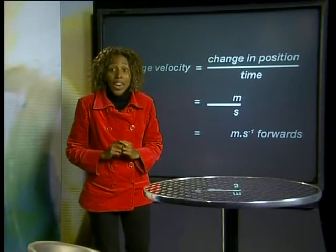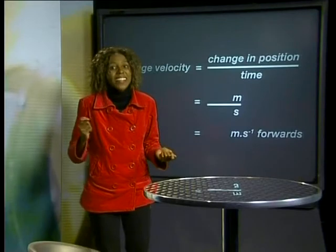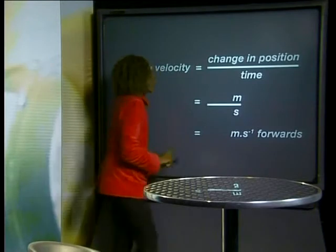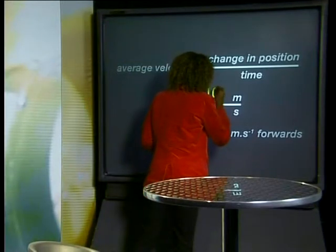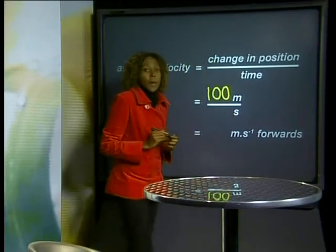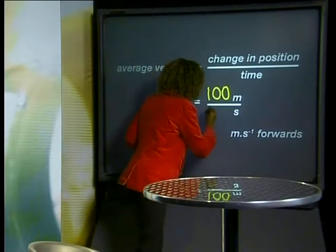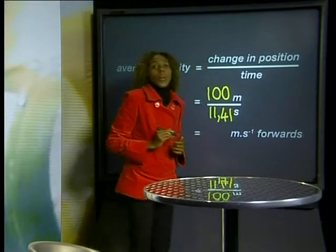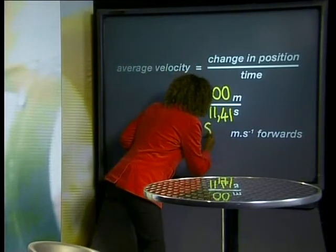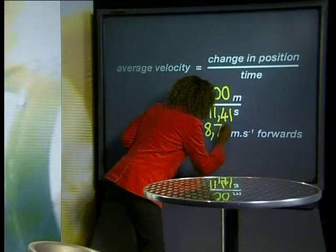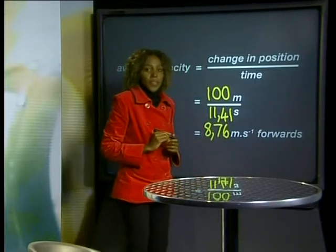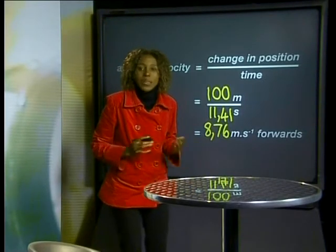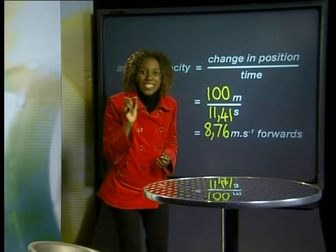Let's substitute the values we have for his change in position and the time he took to run the race into the equation. When you divide 100 meters by 11,41 seconds, we get an answer of 8,76. This tells us that Nkosinati's position changed by 8,76 meters every second of the race.